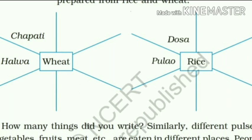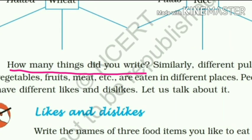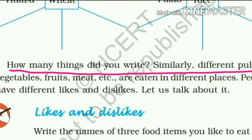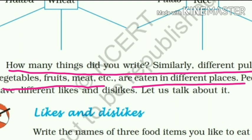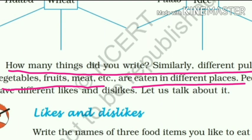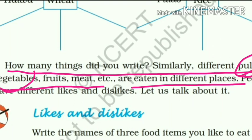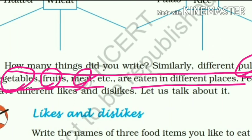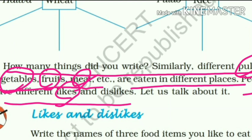How many things did you write? Similarly, different pulses, vegetables, fruits, meat, etc. are eaten in different places. People have different likes and dislikes — everyone likes different things.